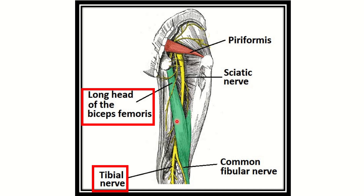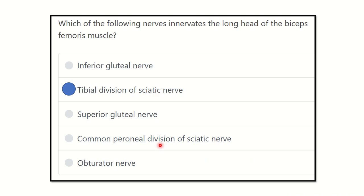The long head of biceps femoris is supplied by the tibial nerve, while the short head, which lies laterally, is supplied by the common fibular nerve, also known as the common peroneal nerve. So the answer is the tibial division of the sciatic nerve, which supplies the long head of biceps femoris. Thank you all.